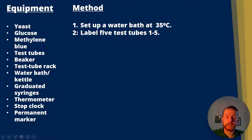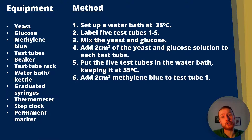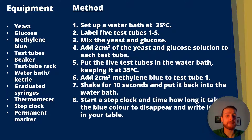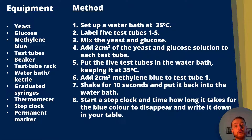Next, label five test tubes one to five and mix the yeast and glucose thoroughly so that the yeast has substrate to carry out respiration. Add two centimetres cubed of methylene blue to test tube one. Shake it for 10 seconds and put it back into the water bath. After you've done this, do not shake it again, because we don't want to mix oxygen back into the solution — oxygen would steal the electrons and cause the methylene blue to turn back to blue.